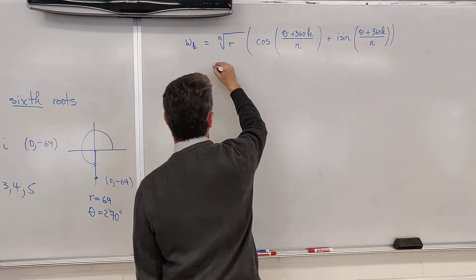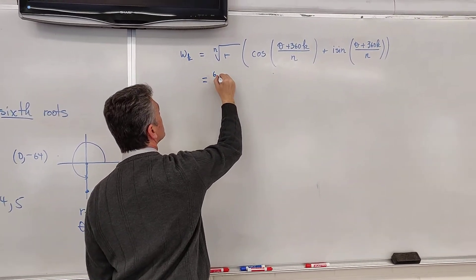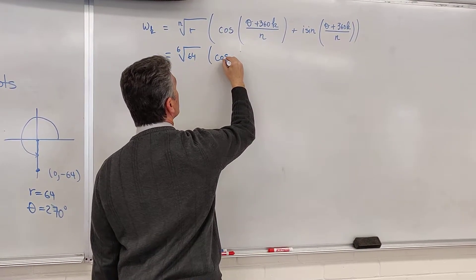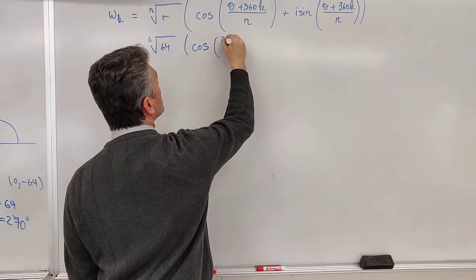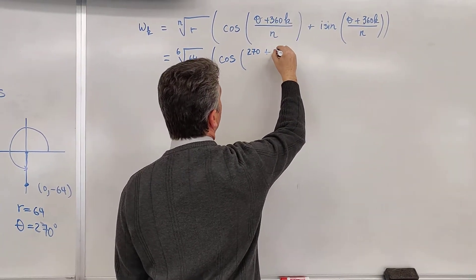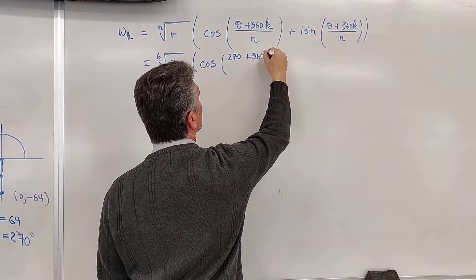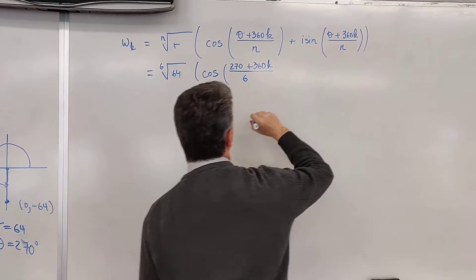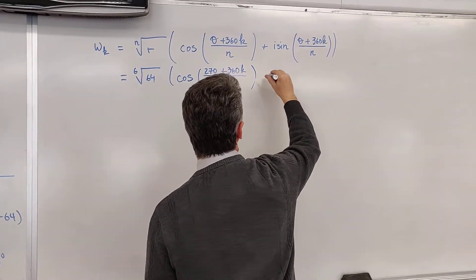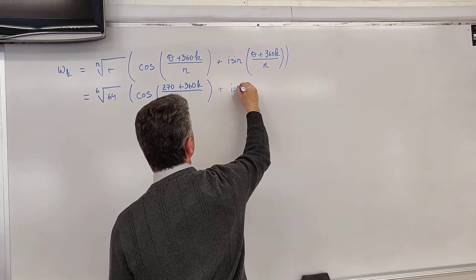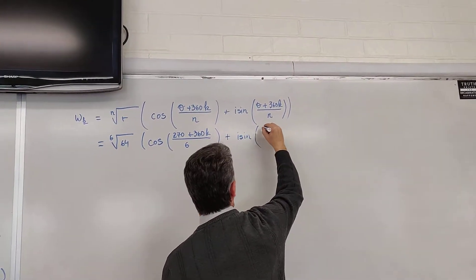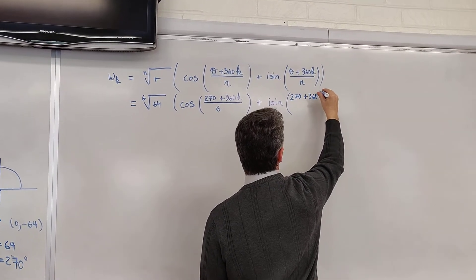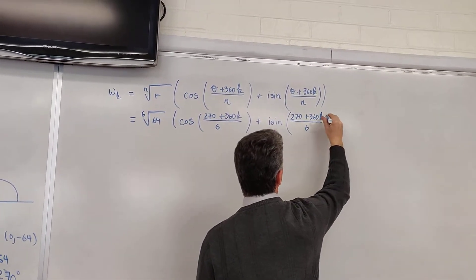We substitute n is 6, r is 64. Cosine of theta is 270 plus 360k divided by 6 plus i sine 270 plus 360k divided by 6.